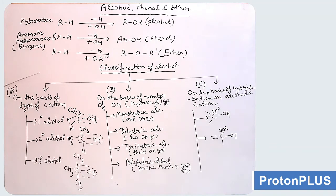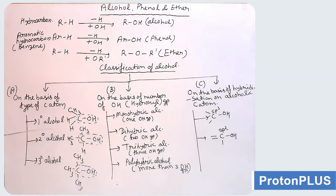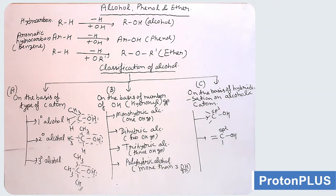Next, we will take classification on the basis of number of OH groups, that is number of hydroxyl groups. If only one OH group is there, then it is monohydric alcohol. If two OH groups, then it is dihydric alcohol — an example of dihydric alcohol is glycol, when two OH groups are adjacent to each other. Next, trihydric alcohol: when three OH groups are there, the example is glycerol. Next, polyhydric alcohol: when more than three OH groups are there, that is polyhydric alcohol.